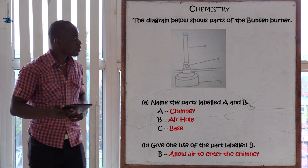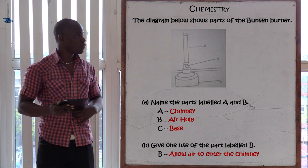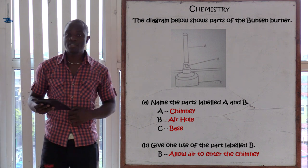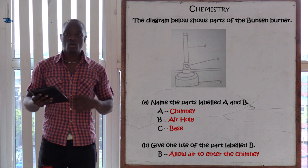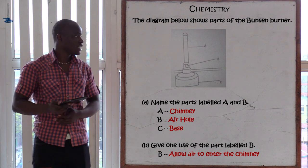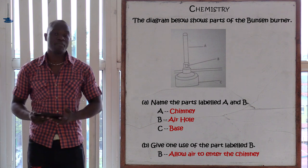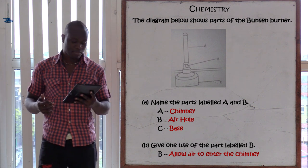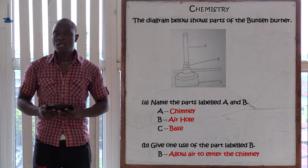So part A is always the chimney. And then part B is where the laboratory air or the free air inside the laboratory can be able to flow inside the Bunsen burner — that part is always called the air hole. And then we also have part C, which is always called the base — that is always the base in the Bunsen burner.